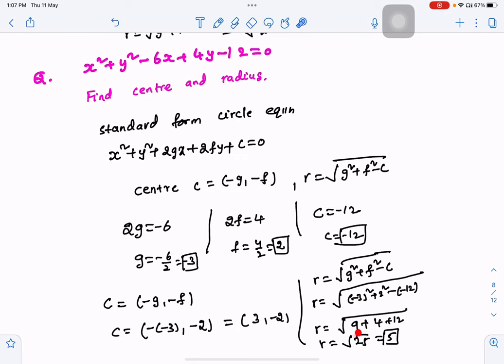Minus 3 square is 9. 2 square is 4. Minus negative 12 is plus 12. So it will be done. Thank you.